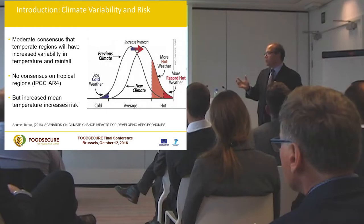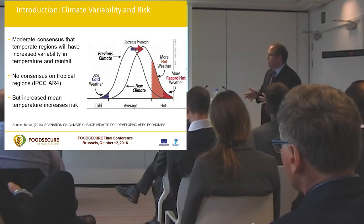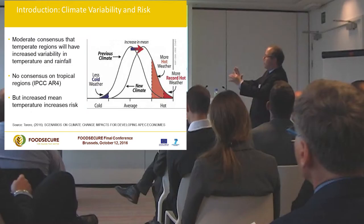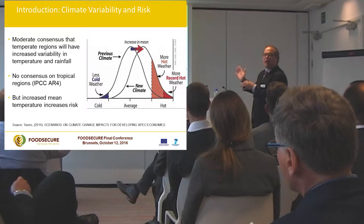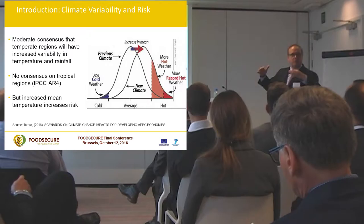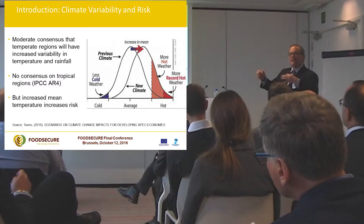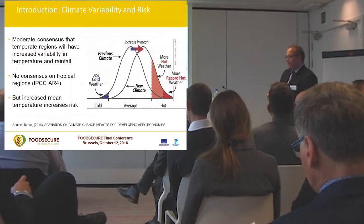Climate change complicates this further. For temperature regions there is increased variability in temperature and rainfall; for tropical regions there is no consensus, but there is an increased mean in temperature. We are observing a shift in the distribution from less hot weather to more record hot weather. All scenarios also show an increase in variance, meaning more frequent shocks globally because of climate change — directly related to the volatility problem.